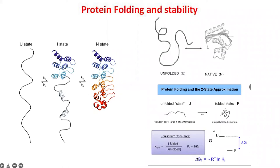The equilibrium constant K relates to the concentration of the folded state over the unfolded state. Using this equilibrium constant K, we can get a Gibbs free energy value using the formula delta G — the difference in Gibbs free energy between the unfolded and the folded states. This difference, which we can measure by experimentation, tells us how stable a folded state is over the unfolded state.